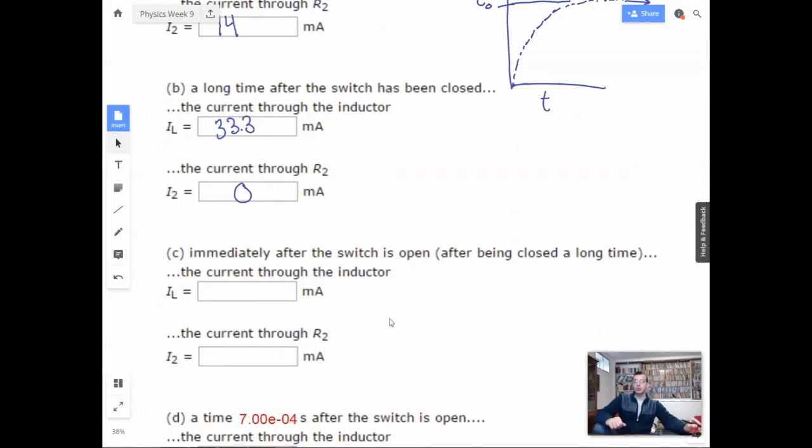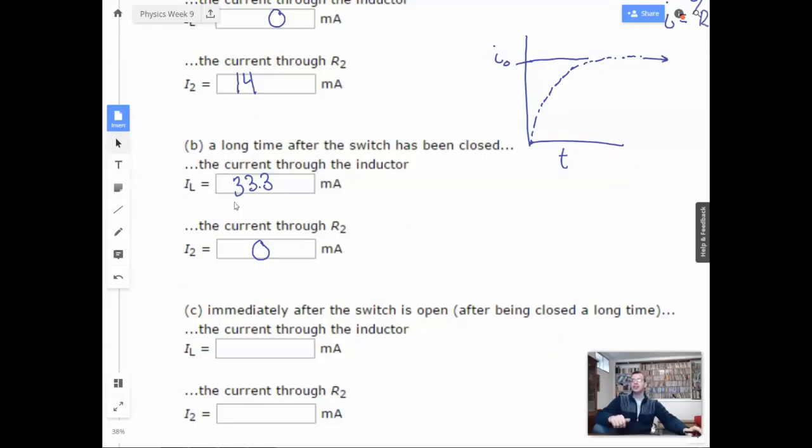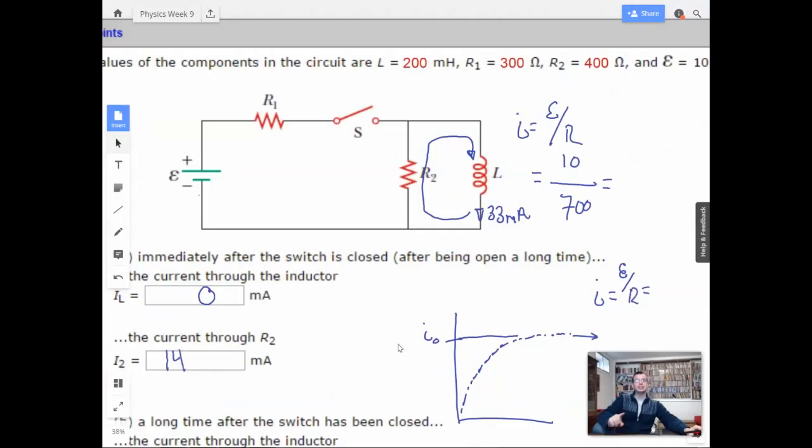Immediately after the switch is open, after being closed a long time. So we have the first scenario, our water wheel over here is spinning like crazy, specifically at 33.3 milliamps, and we then open the switch. So what happens here is we then open the switch. So we have 33 milliamps going this way, so then it's going to go like that. So it's no longer going to take this path because it can't go, the switch is open now. So now it's going to force the same current because the inductor will oppose a change in current, it's a water wheel pushing through the current.